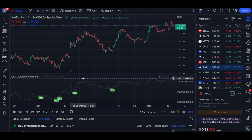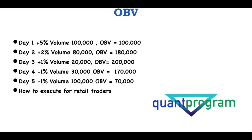What is On Balance Volume? It's just like the normal volume indicator, but instead of being on a daily basis, it cumulatively adds up to the volume of the previous day. Let's say Day 1 the market closes up 5% and the volume is 100,000. After Day 1, the On Balance Volume becomes 0 plus 100,000 — it's plus because we got a positive close. Day 2, we've got plus 2% again — a positive close — and the volume is 80,000, so we add 80,000 to the 100,000 to become 180,000.